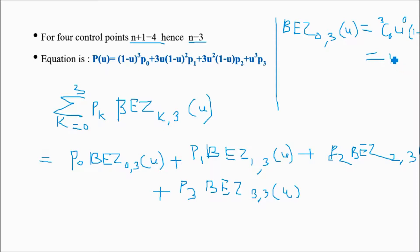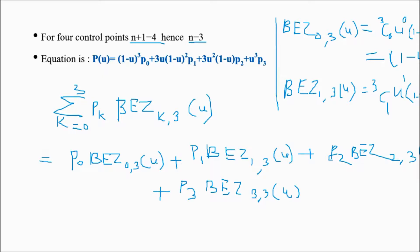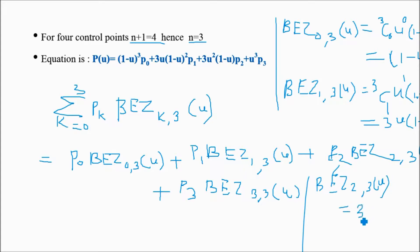Bezier(1,3)(u) equals 3C1 times u raised to 1 times (1 minus u) raised to 2. Since 3C1 equals 3, this gives us 3u(1 minus u) squared. Next, Bezier(2,3)(u) equals 3u squared times (1 minus u). Finally, Bezier(3,3)(u) equals u cubed.